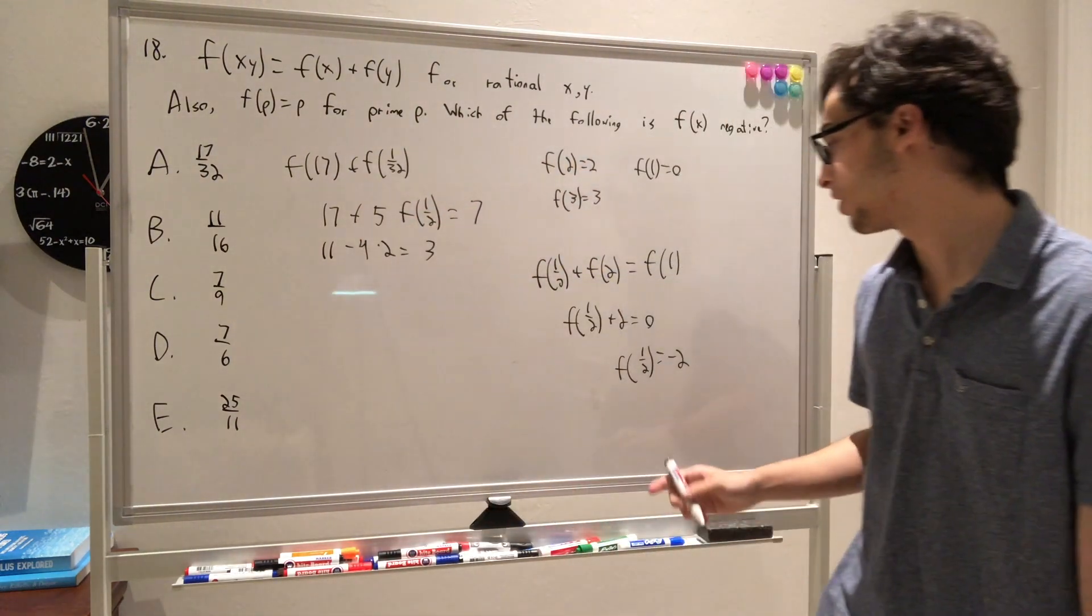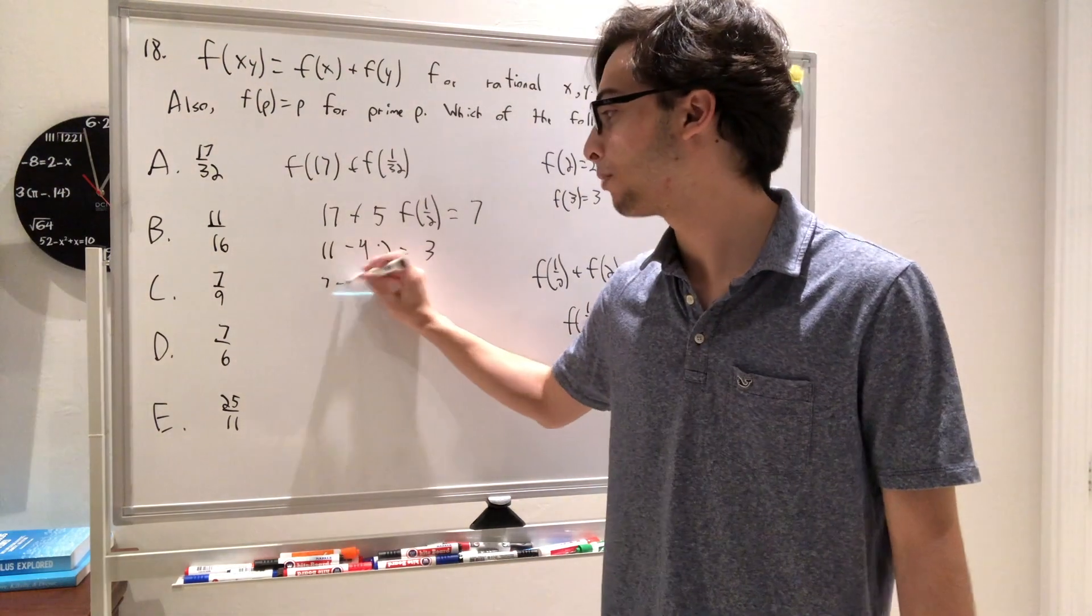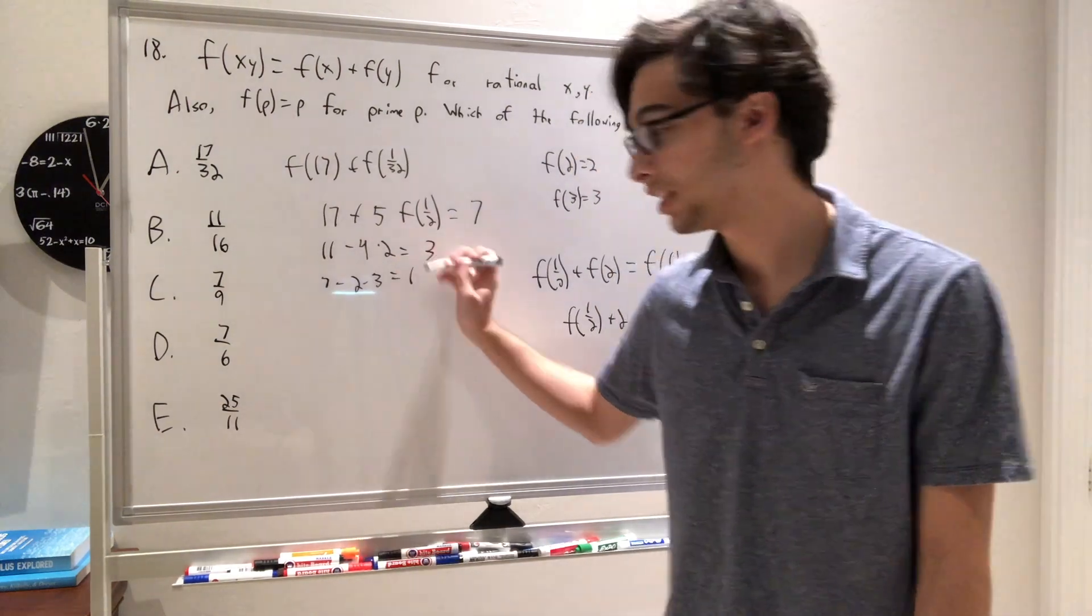Okay, this one, we need to figure out what f of 1 third is. Well, by the similar logic, we have that f of 1 third is going to be equal to negative 3, so we're going to have a 7 minus 2 times 3 is equal to 1, still not negative.